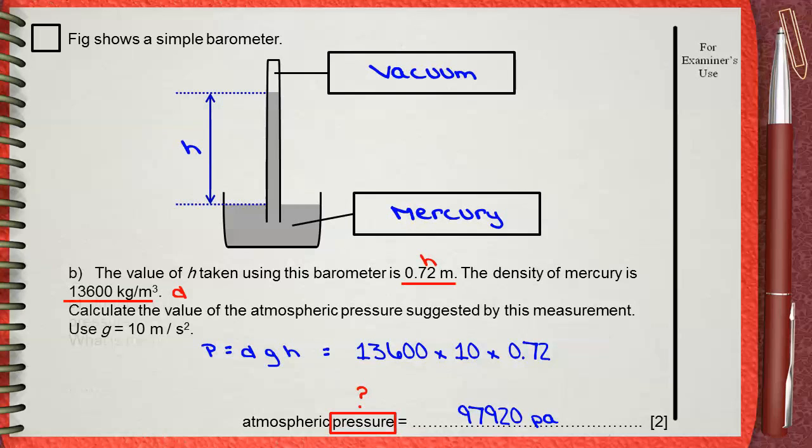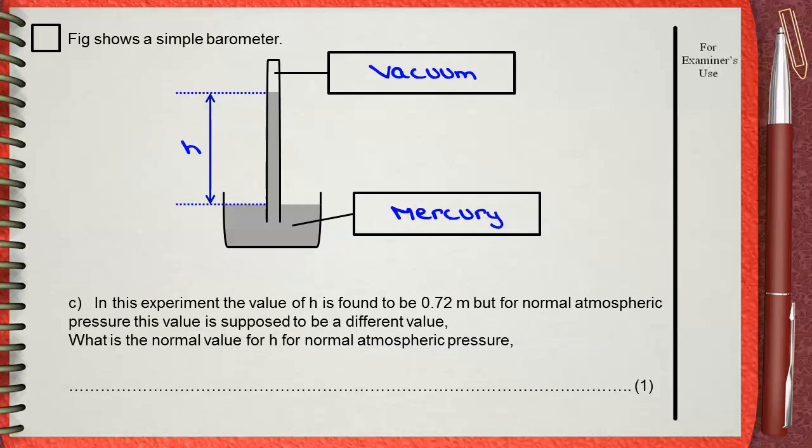Part C: In this experiment, the value of H is found to be 0.72 meters. But for normal atmospheric pressure, this value is supposed to be different. What is the normal value for H for normal atmospheric pressure?